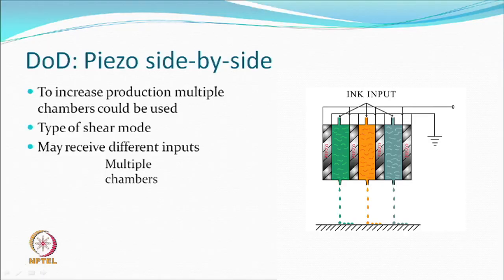Production is normally described as how many square meters of fabric have been printed rather than the speed of the machine, because the speed may change depending on the area of print. Frequency is one of the parameters that determines production. Instead of having one chamber and one device, you can have multiple devices acting as displacement units, and their walls can themselves be part of the chamber.